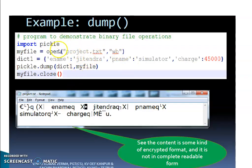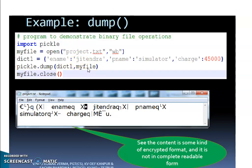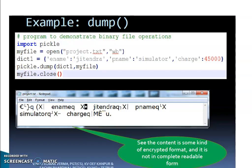See the program: import pickle; myfile = open('project.txt', 'wb'). The binary file is opened in write mode. Then a dictionary is defined, and pickle.dump(dict1, myfile) writes the dictionary into myfile — which is the file handle for project.txt. Then myfile.close(). When you write something in a binary file, the content is in a kind of encrypted format and is not in completely readable form; some extra characters are added.